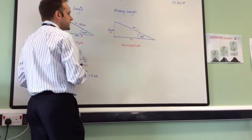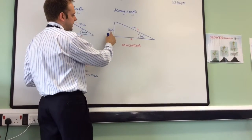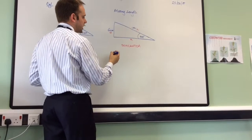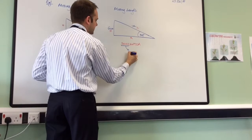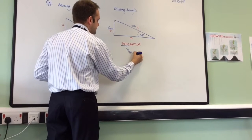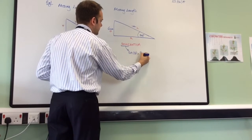And then what we do is we look at what we have. We have O, we want H. Which one links O and H? It's going to be SOH. And we write down the formula: sine of theta is equal to O over H.